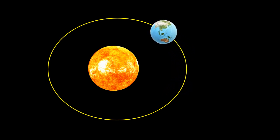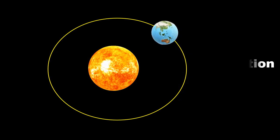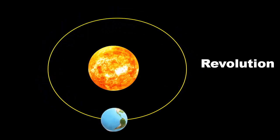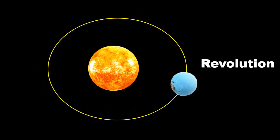The Earth moves around the Sun — this is called revolution. The Earth also moves around its own axis from west to east at a speed of 1,610 kilometers per hour — this movement is called rotation.